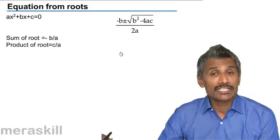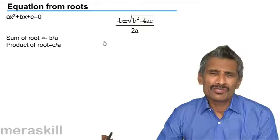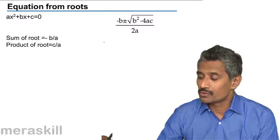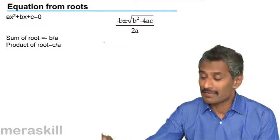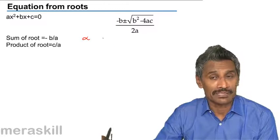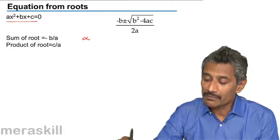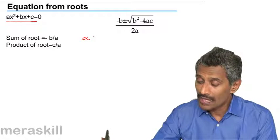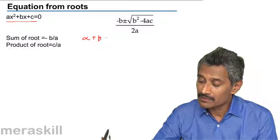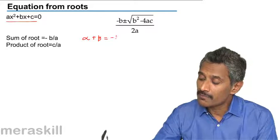If you want to find the nature of roots, remember, we can give the roots names alpha and beta for our comfort. So if you consider the equation ax squared plus bx plus c equals 0, alpha plus beta will always be minus b by a.